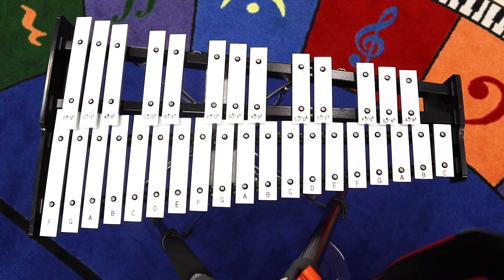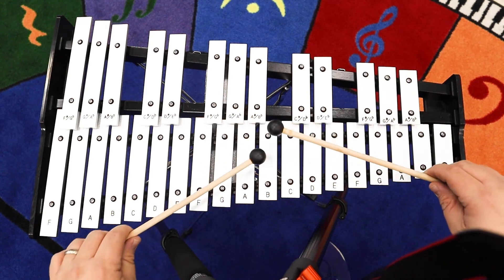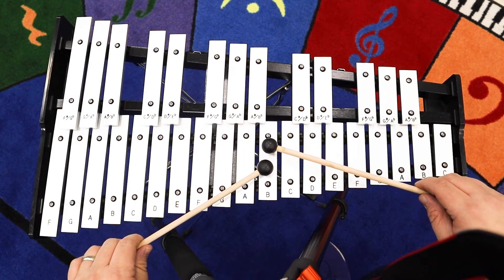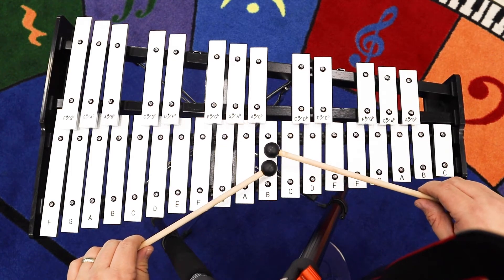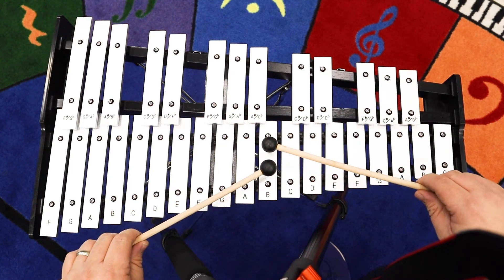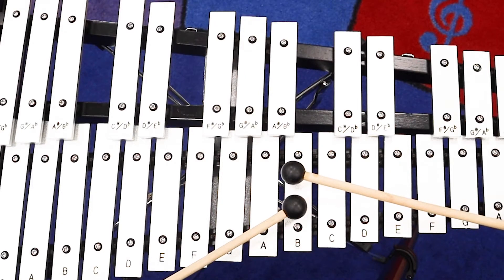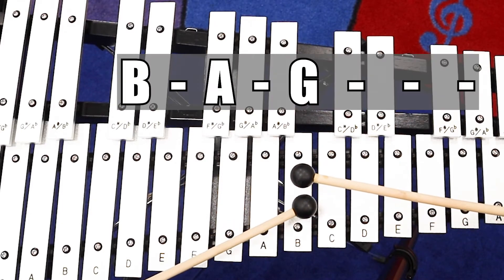Now the next thing we're going to do is learn the first line. It goes B, A, G. I'll play first, you copy me. We'll do it two times. One, two, here we go.